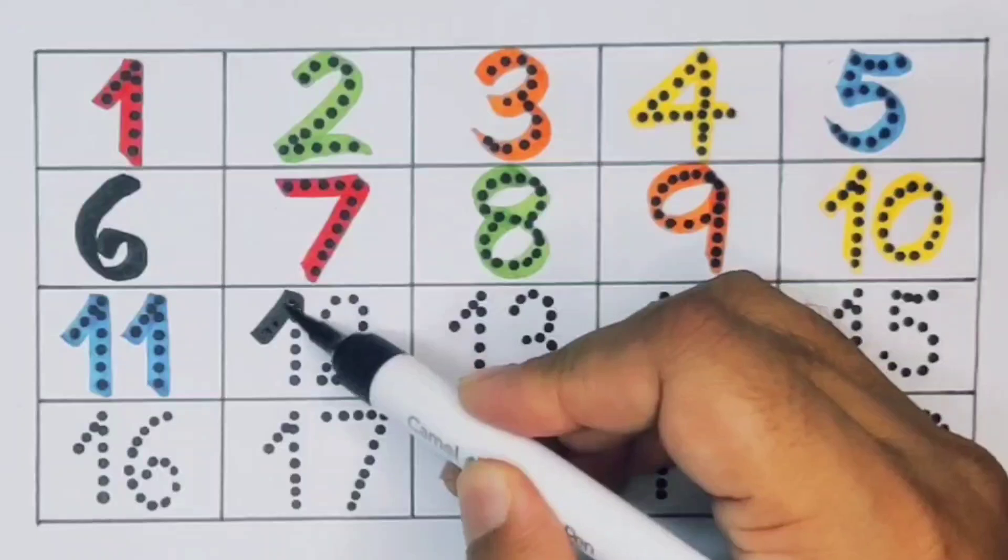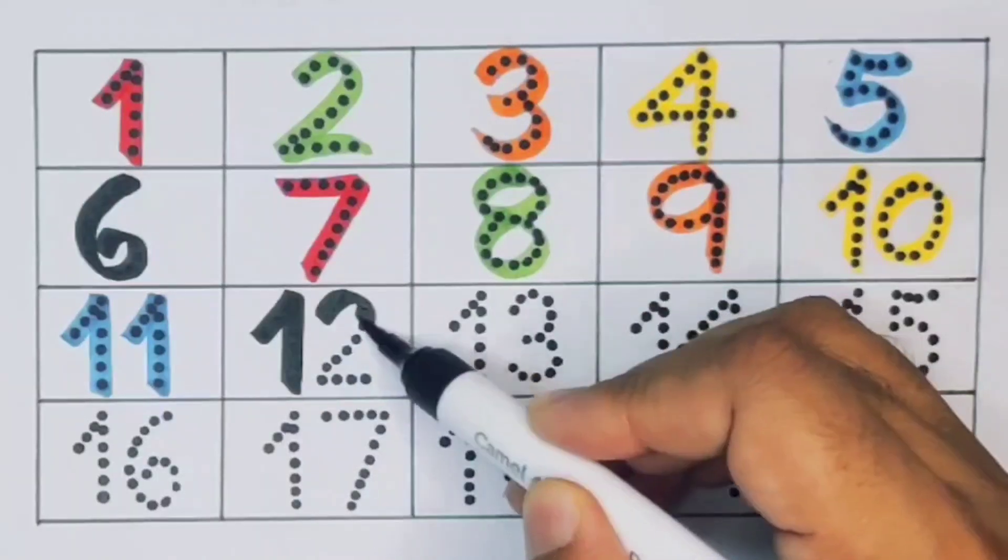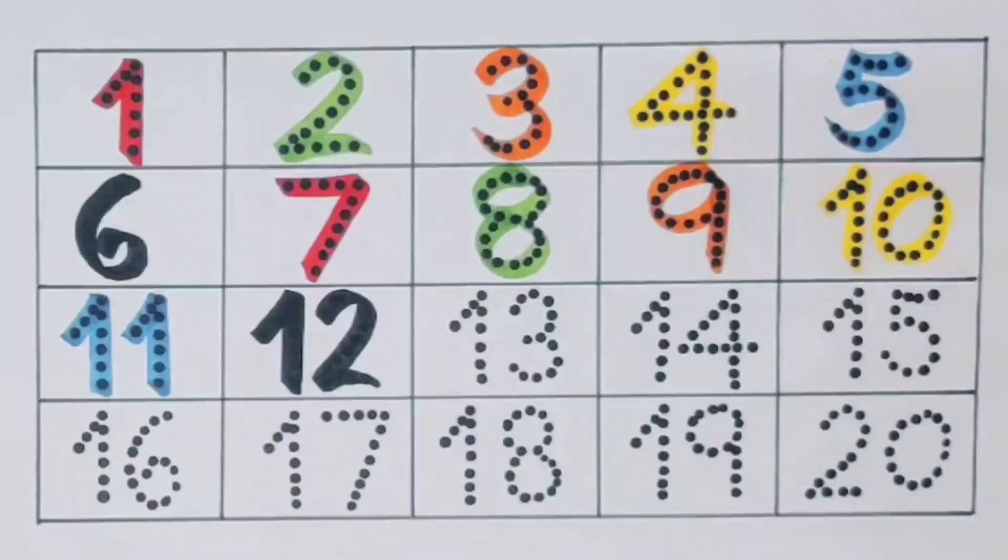Next kids, eleven, one one, eleven, number eleven. Next kids, twelve, one two, twelve, number twelve. Next kids, thirteen, one three, thirteen.